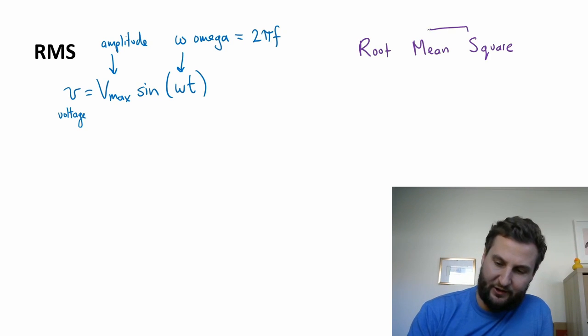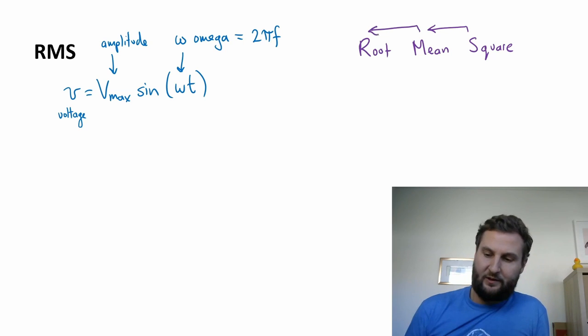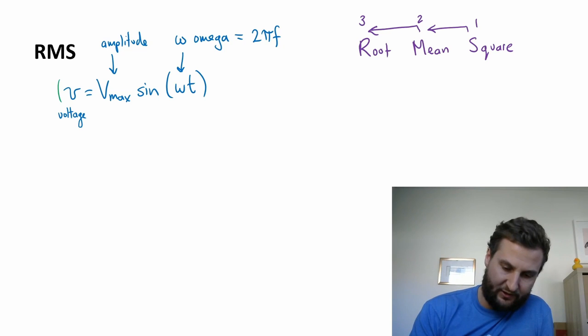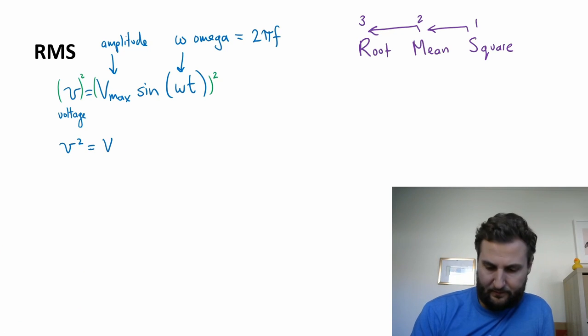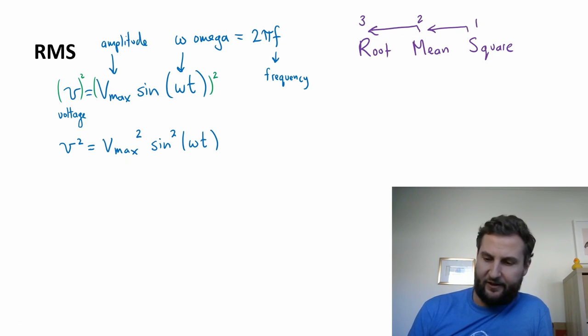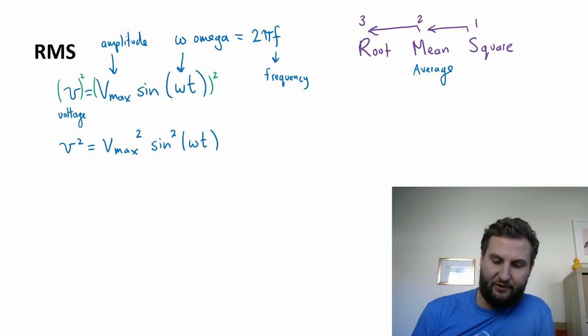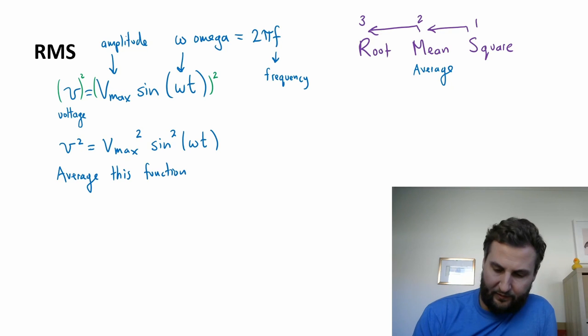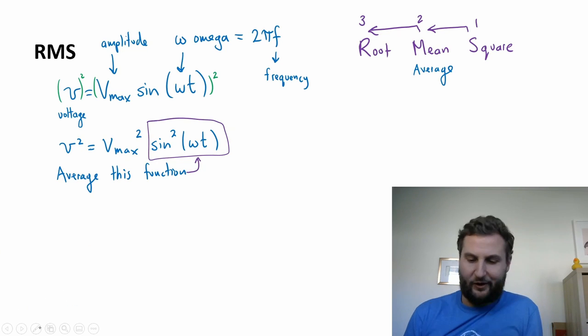So root means square, the way we're doing this is we're actually going backwards. So first we're going to start here with squaring, and then we'll take the average, and then we're going to square root. So first of all, I'm just going to square this whole function. So that just looks like this, we can square both sides. So all I've done there is rewrite that. Step two is the mean, and this is the same as the average. So again, we have an oscillating function, we're taking the average, but now because we've squared it we no longer have any negatives. And so we want to average this function.